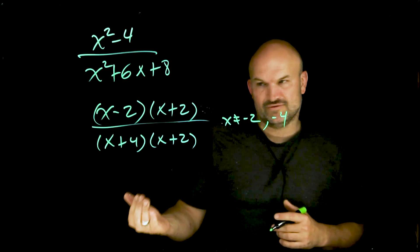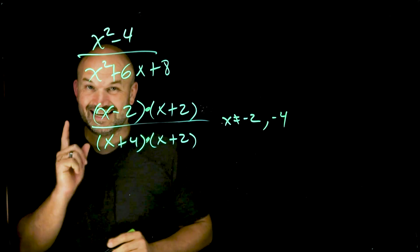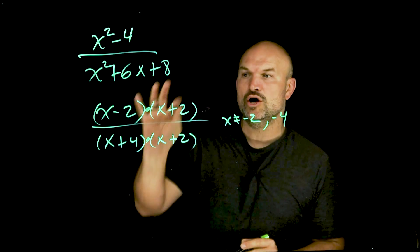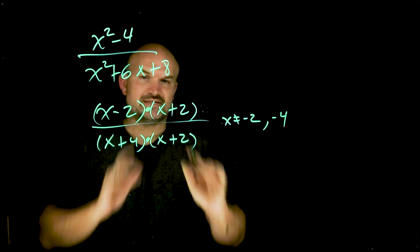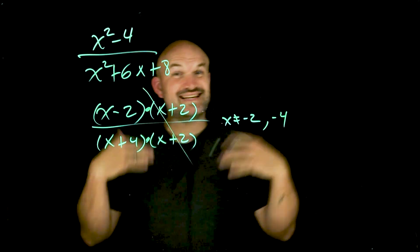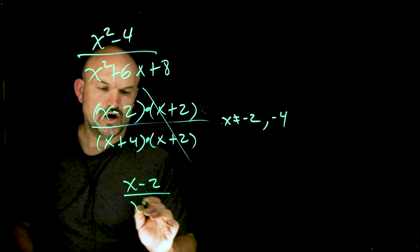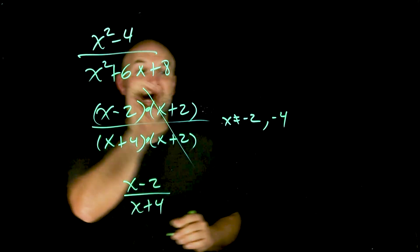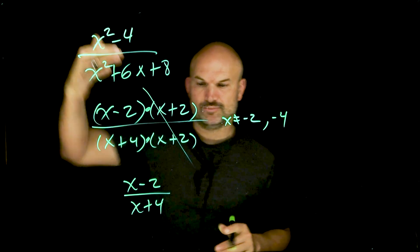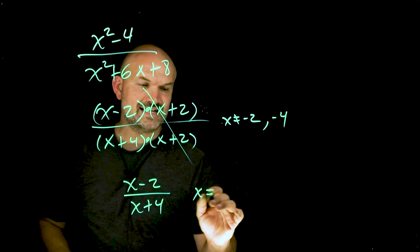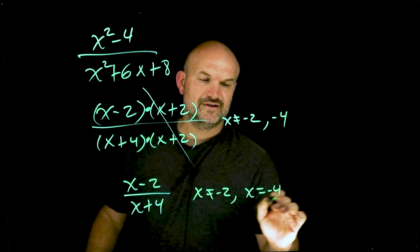Now for the simplifying: these expressions are separated by multiplication, so we can apply the division property. X plus two and X plus two are exactly the same, so they divide out. My simplified expression is (X minus 2) over (X plus 4). However, we still need to keep the restrictions from our original problem: X cannot equal negative two and X cannot equal negative four.